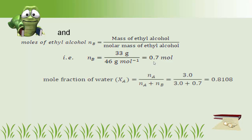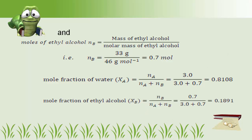Using the number of moles of alcohol and water, we can obtain the mole fractions. Mole fraction of water XA = 3.0 / (3.0 + 0.7) = 0.8108. Similarly, mole fraction of ethyl alcohol XB = 0.7 / (3.0 + 0.7) = 0.1891. In this way, one can obtain the mole fraction of each component present in the solution.